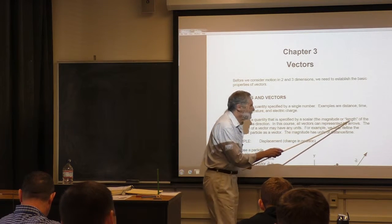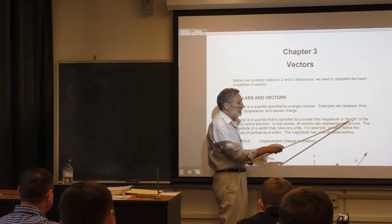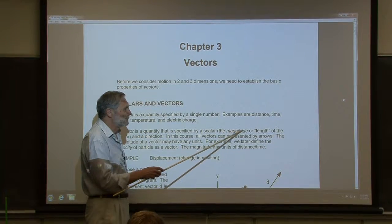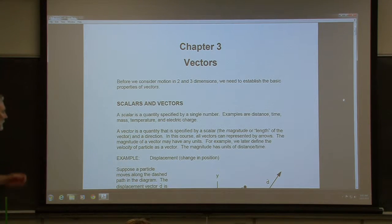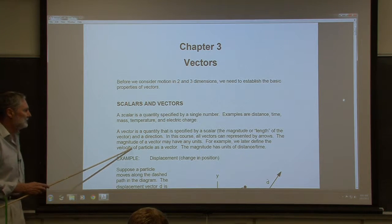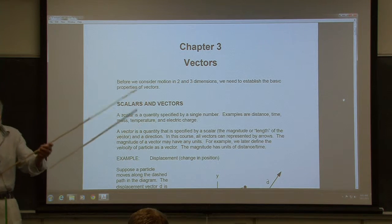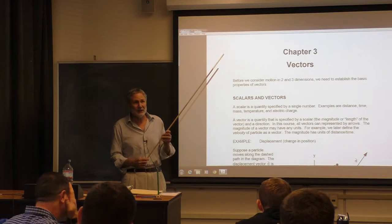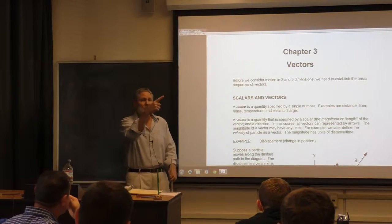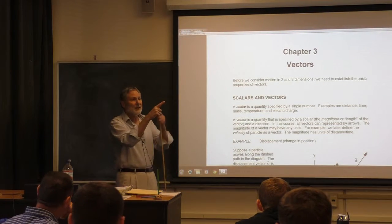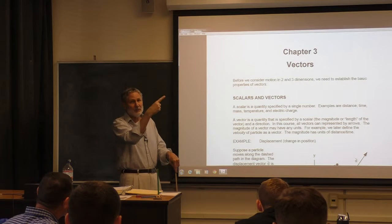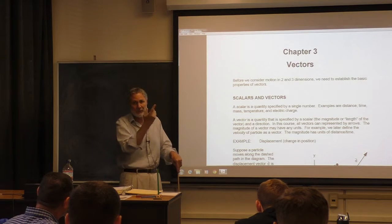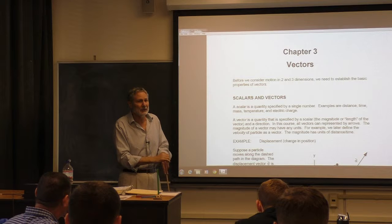The length of the vector, which may or may not be in meters, is called the magnitude of the vector. As an example, velocity is a vector. If you've got a particle that's moving, it's going to have some speed — that's the magnitude of the velocity — and the direction will be whatever direction it's moving in at that instant.